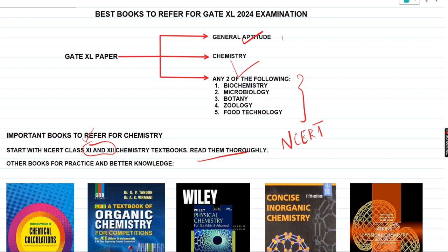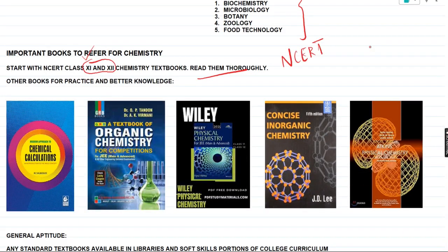After reading NCERT thoroughly and getting well familiarized with the concepts, I would suggest going for a lot of practice with certain prescribed textbooks for inorganic chemistry and organic chemistry, which are used for various competitive exams but are also very helpful for the GATE XL chemistry section. Then I'd definitely recommend solving previous years' questions with your own approach and comparing with answers to check your scores.